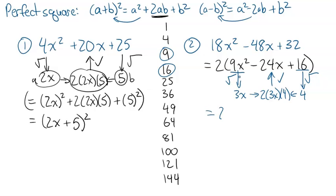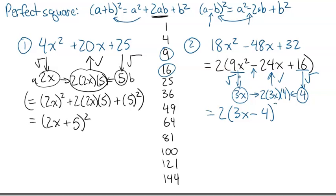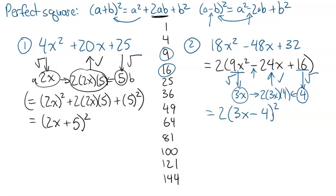So what I can do is write this as 2 times — the a term was 3x, the b term is 4 — but in this case, because I have a minus sign, it's going to be minus in the brackets. So this is going to be 2 times 3x minus 4 all squared, and the 2 just stays out in front. So there's the perfect squares — let's have a look at the difference of squares now.